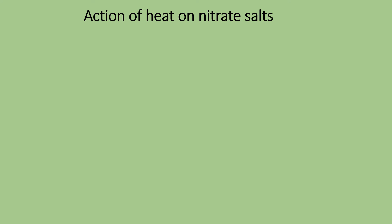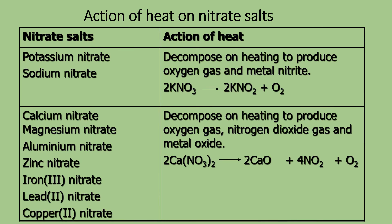Action of Heat on Nitrate Salts — refer to page 11. Potassium nitrate and sodium nitrate are both decomposed by heat, but they produce the corresponding nitrite salt and oxygen. For example, potassium nitrate produces potassium nitrite and oxygen. Note the spelling: NO₃⁻ is nitrate and NO₂⁻ is nitrite. Sodium nitrate similarly produces sodium nitrite and oxygen.